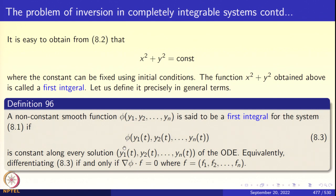Namely, if I evaluate the function φ along the solution curve (y1(t), y2(t), ..., yn(t)), then the value remains constant. Stated differently, you look at the level set φ = c. The level set φ = c is a surface in R^n, and the trajectory — the solution curve — lies on this surface for all times. There are several different ways of looking at it.